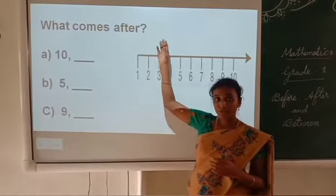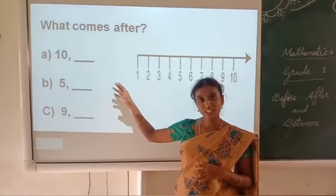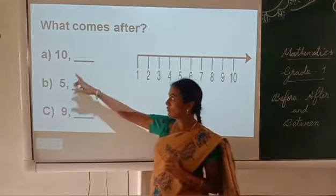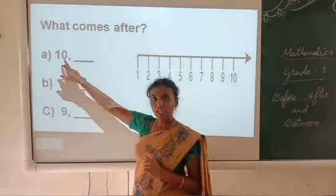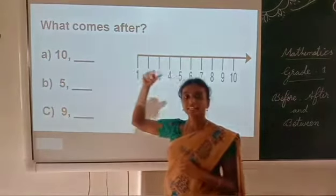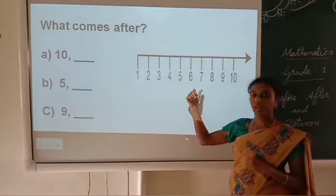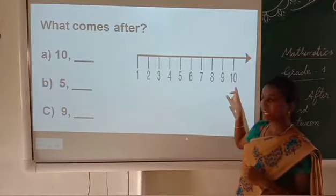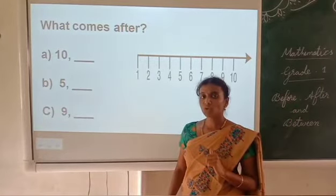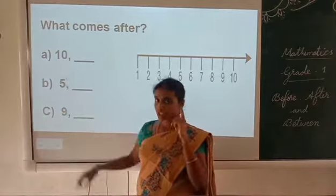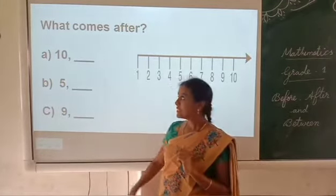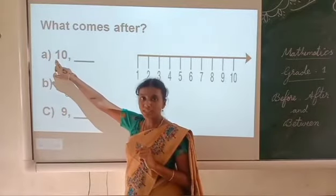Now we are going to see some examples for after numbers. Look at the first one: 10. We are going to find the after number of 10. The number line goes up to 10, but you already know your numbers — which number comes after 10? Yes, 11 comes after 10.